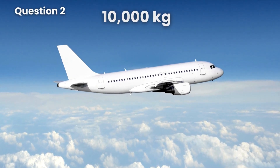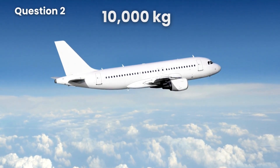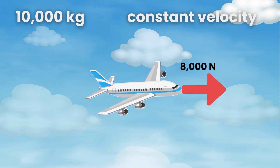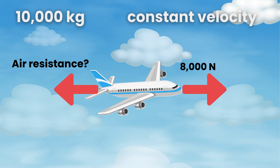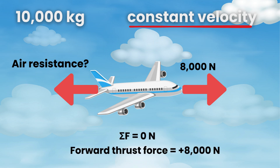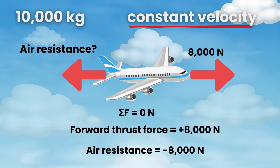Question 2: A 10,000 kg airplane flying at a constant velocity has a forward thrust force of 8,000 newtons. How much air resistance does the plane experience? Since the airplane is flying at a constant velocity, the net force acting on it is zero newtons. This means the forward thrust force must be equal and opposite to the air resistance. So the air resistance equals 8,000 newtons in the opposite direction.